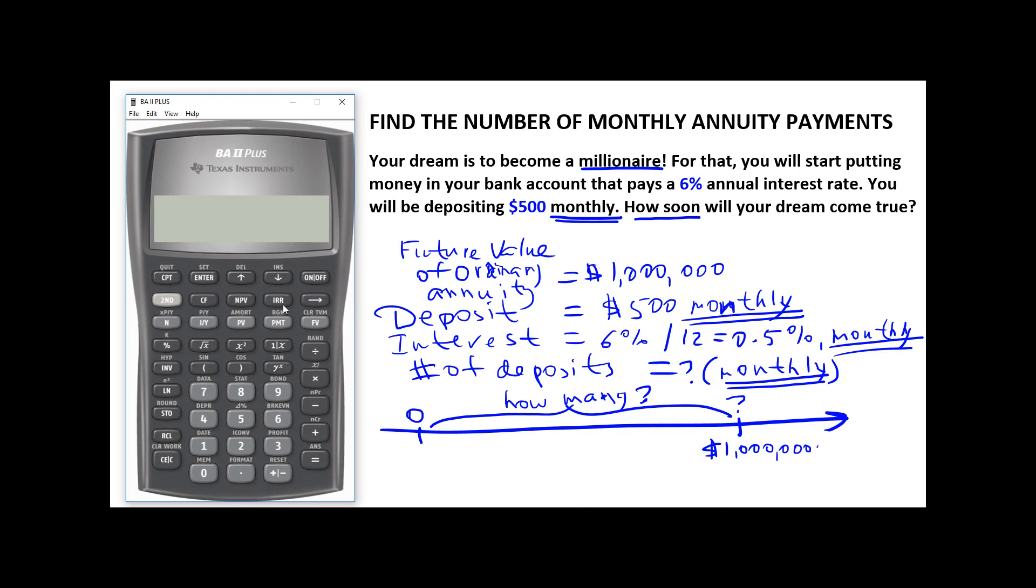How do we solve this? Let's bring up the financial calculator. Turn it on. Let's increase the number of decimal places. Second, format. Let's change it to 7. If you turn the calculator off and turn back on, it's now going to round everything to the 7th decimal place. We need to make this change because we are going to be dealing with a lot of very small numbers, such as half a percent interest rate per month.